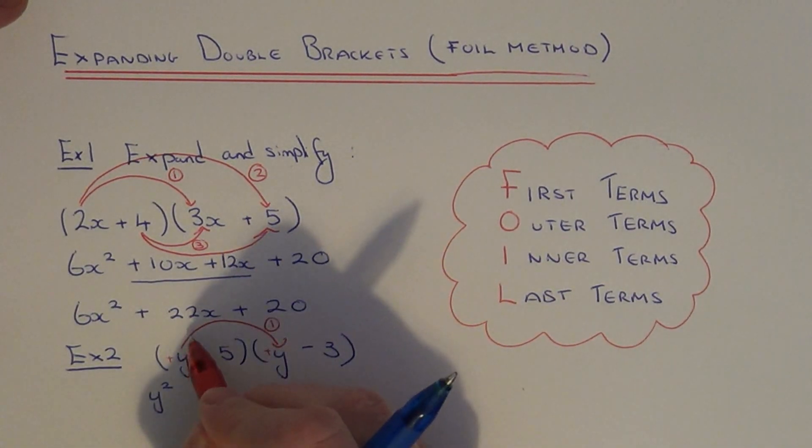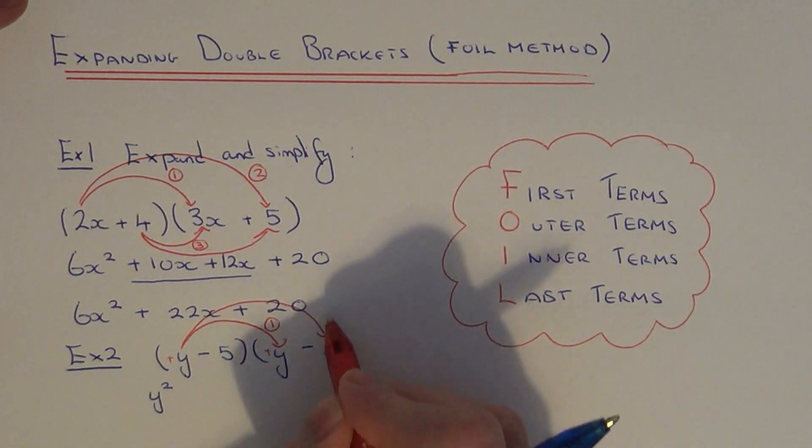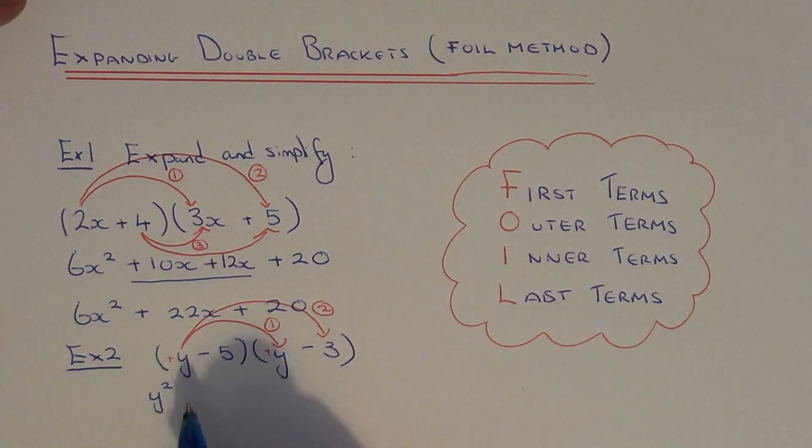Then multiply the outer terms in each bracket. So you've got y, but this time it's multiplied by minus 3. So y times minus 3 is minus 3y.